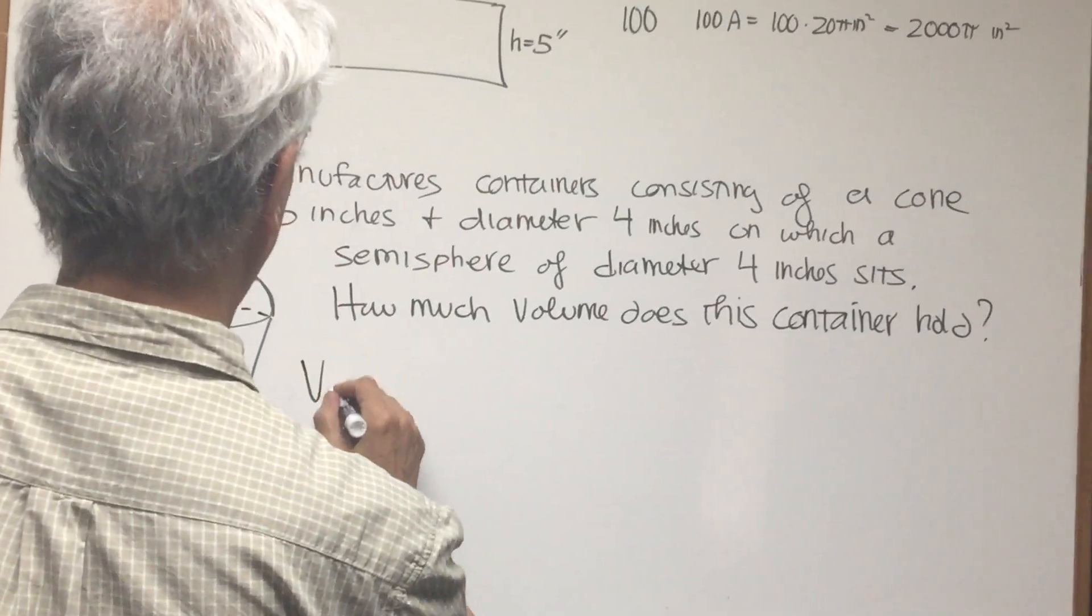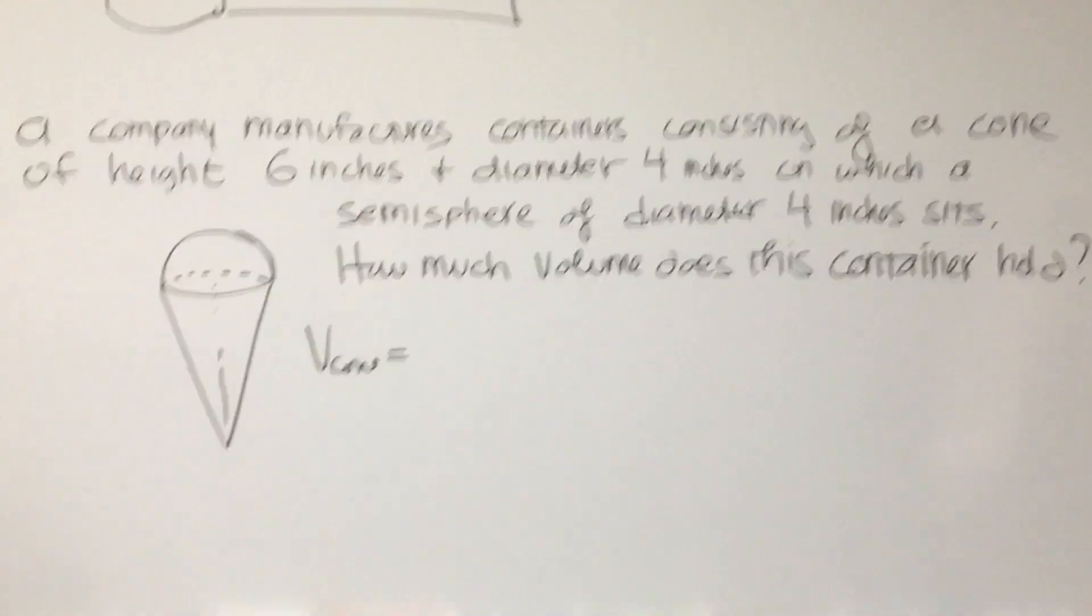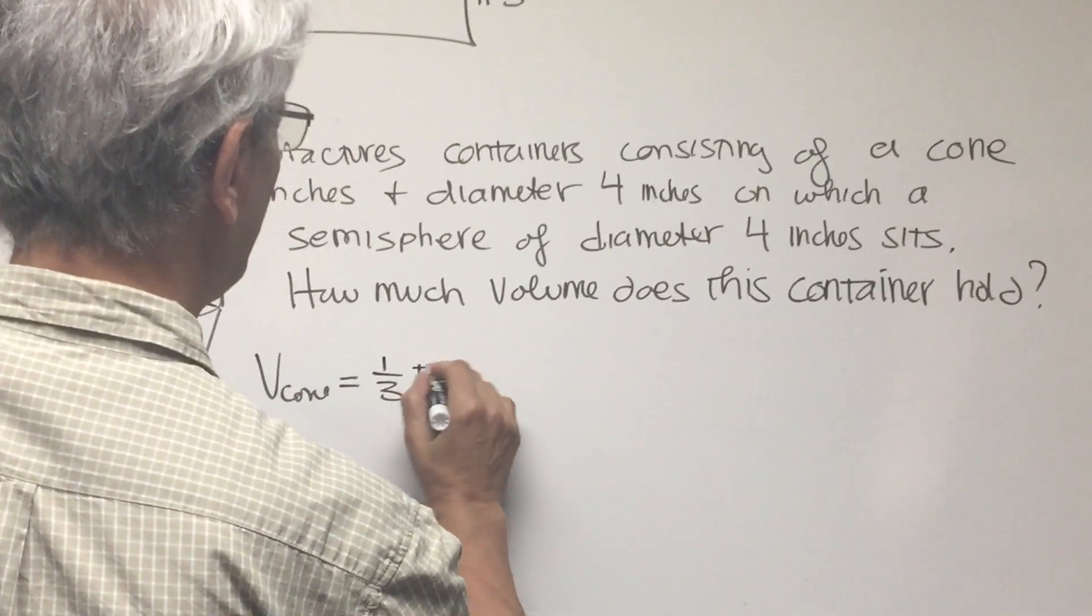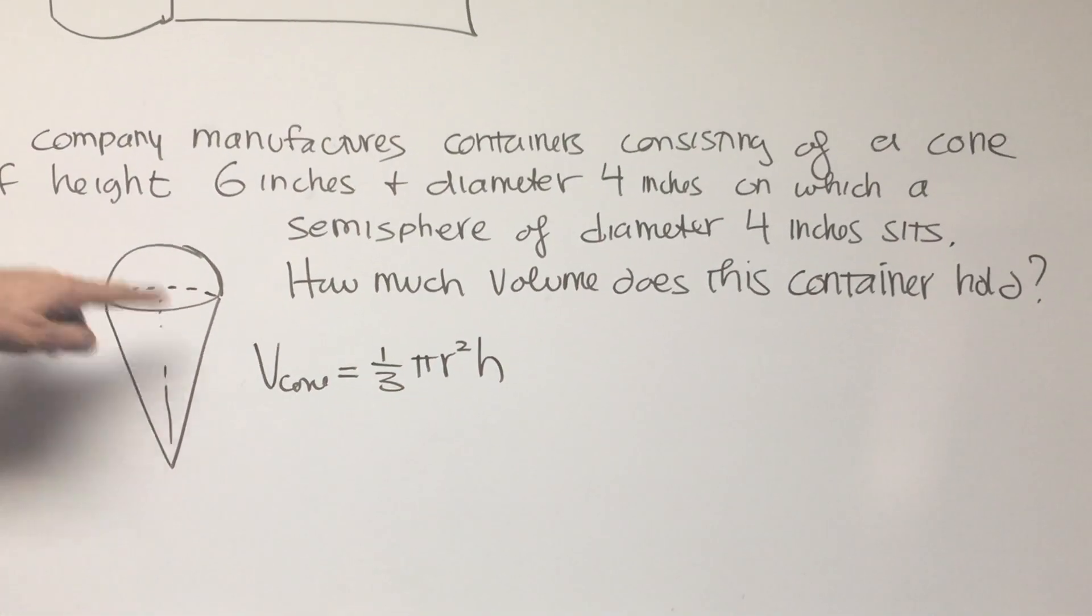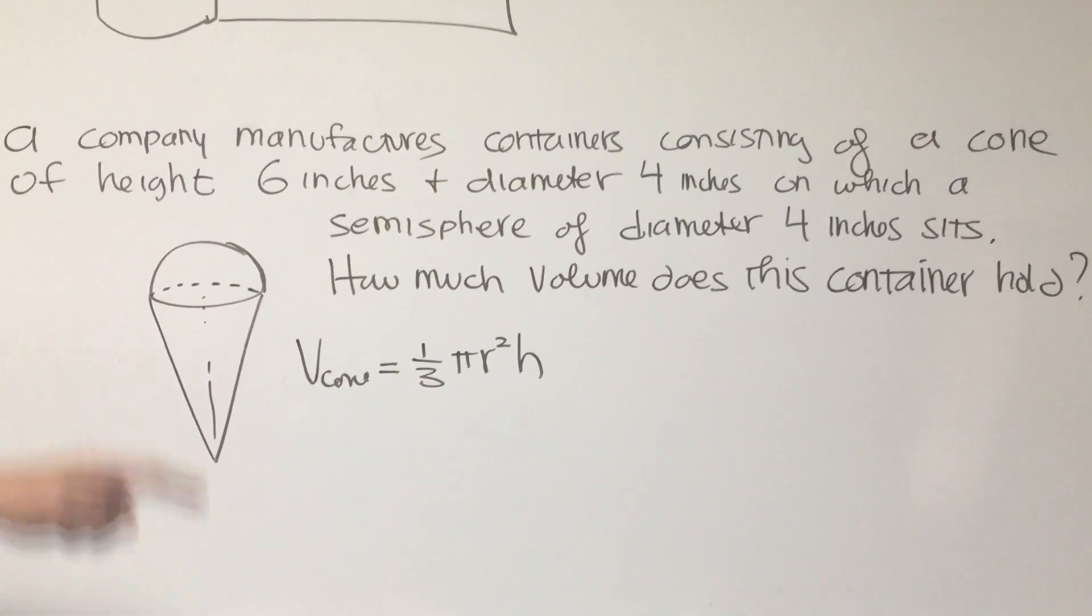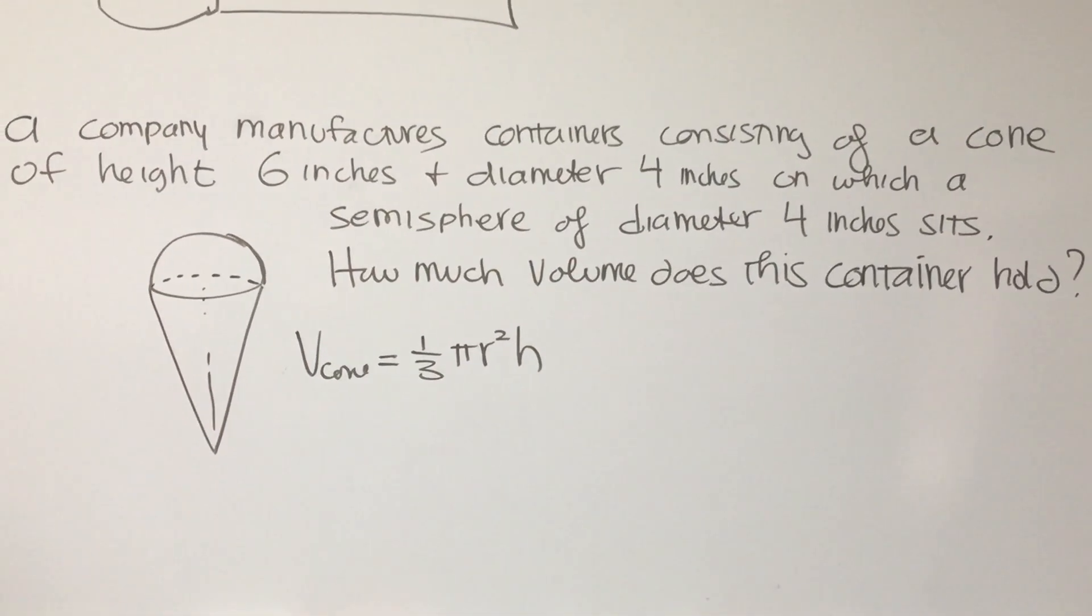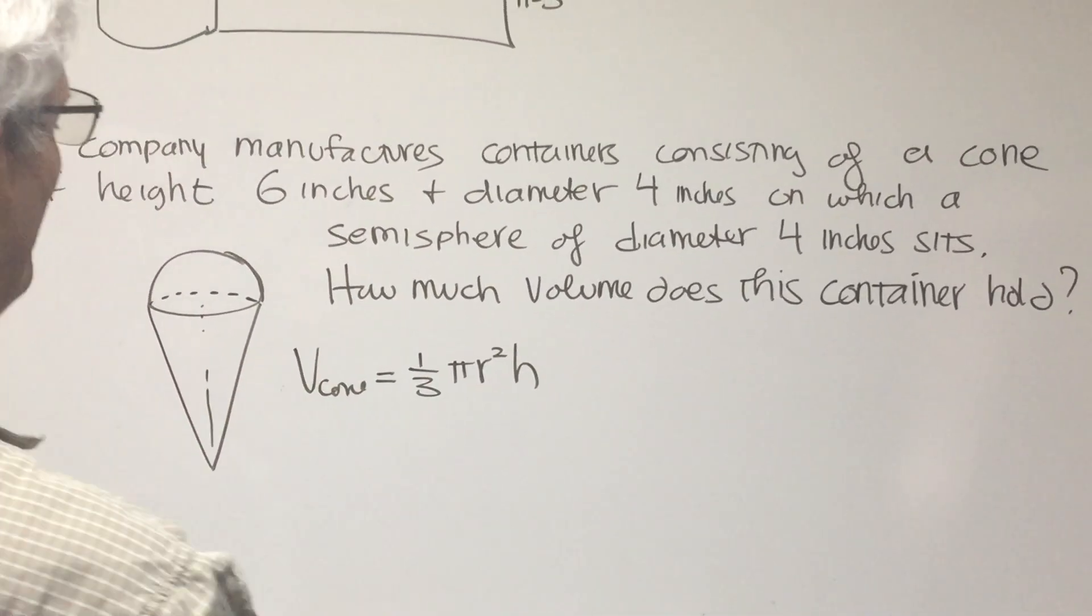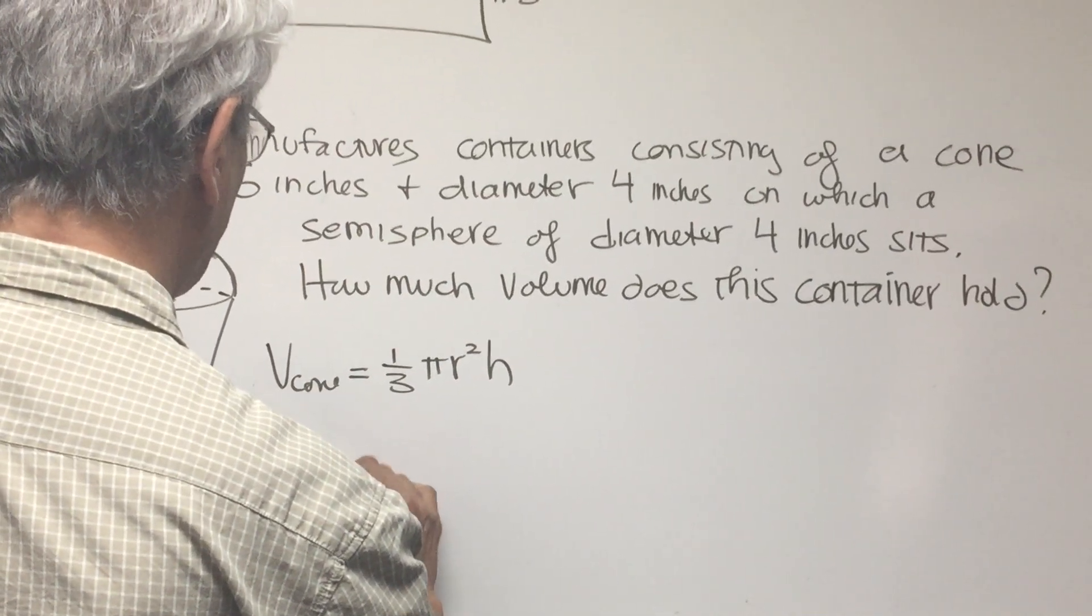So the volume of a cone is equal to one-third πr²h. πr² being the area of the base of the cone, the height being the height of the cone, and you just divide by 3. Okay, so that's going to be the volume of the cone.